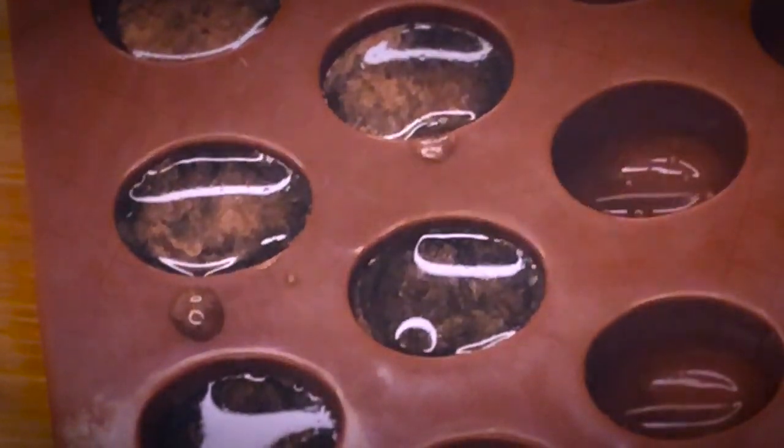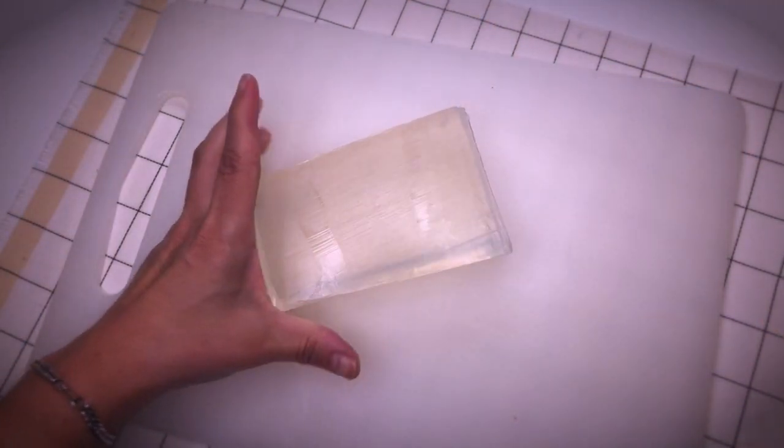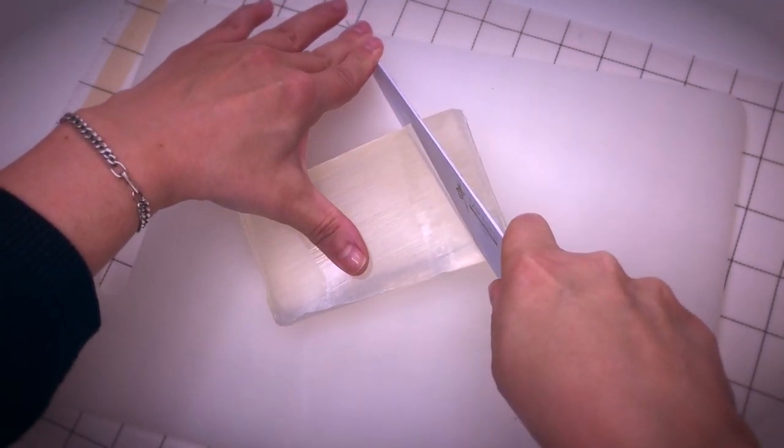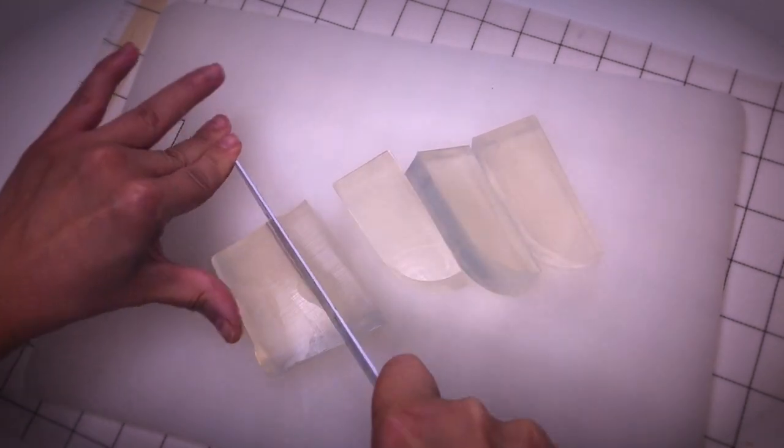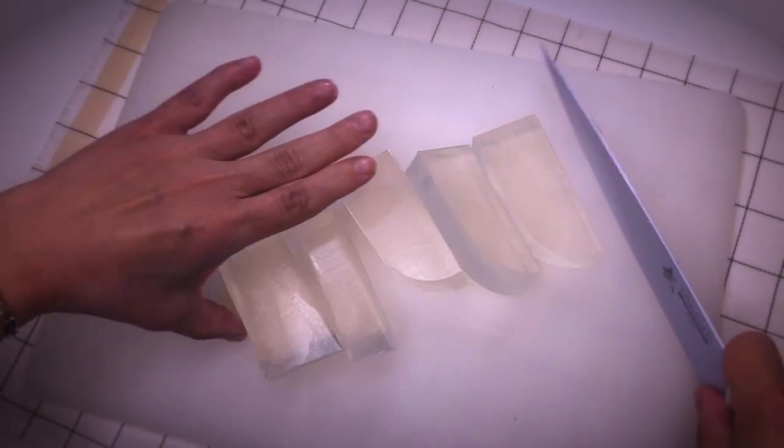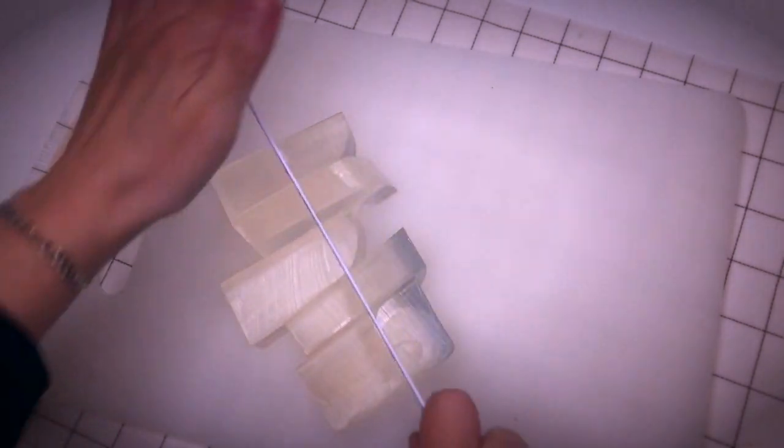Leave it to cool and harden for a couple of minutes. In the meantime I will cut some melt and pour in smaller chunks to add it to the double boiler. You can also use a microwave to melt down your soap in short increments to prevent overheating.